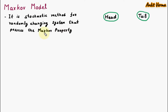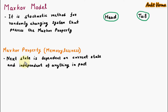Now we are learning the Markov Property. It is also called Memory Lessness. The Markov Property or Memory Lessness says that the next state is dependent on the current state and independent of anything in the past. The meaning is the next state is dependent on the current state — means if we are moving further, we are only considering the current state. And independent of anything in the past means the past experience we are not considering. So to take the further decision we should only consider the current state. We will forget about the past. This is the Markov Property.